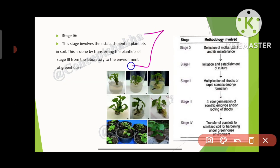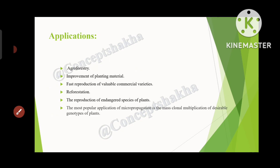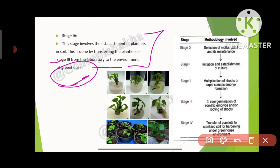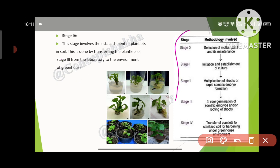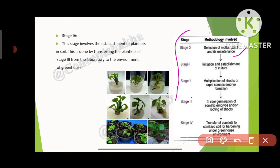Stage 4 involves the establishment of plantlets in the soil. This is done by transferring the plantlets from Stage 3 — from the lab to the greenhouse environment. To summarize: Stage 0 is selection and maintenance of the mother plant; Stage 1 is initiation and establishment of culture; Stage 2 is multiplication of shoots or rapid somatic embryo formation; Stage 3 is in vitro germination of somatic embryos or rooting of shoots; and Stage 4 is transfer of plantlets to sterilized soil for hardening under greenhouse conditions.